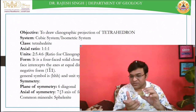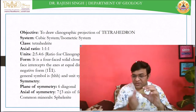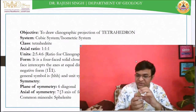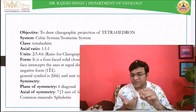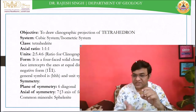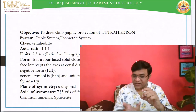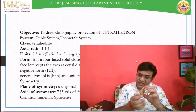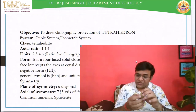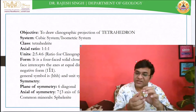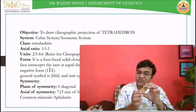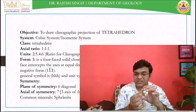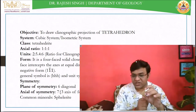In the cube also you get a diagonal axis which shows fourfold symmetry, and the number of such axes is four. So these are the diagonal axes — this is not the crystallographic axis.